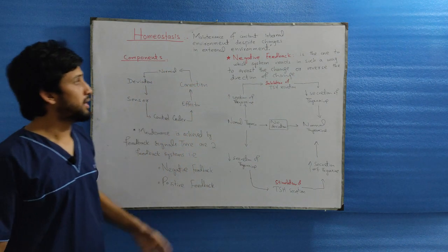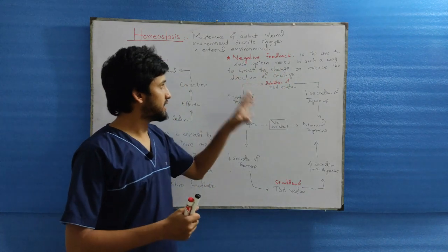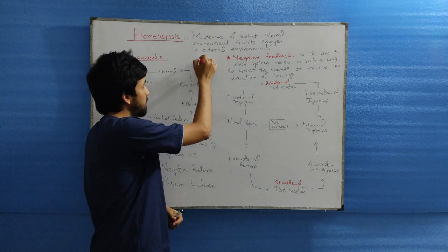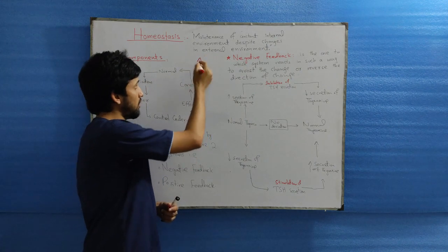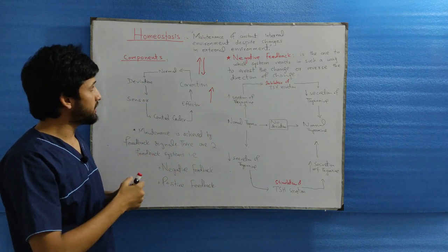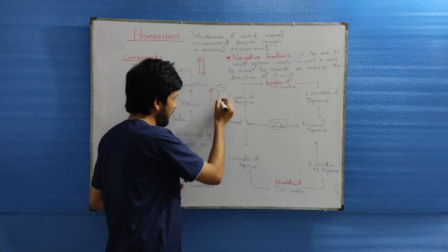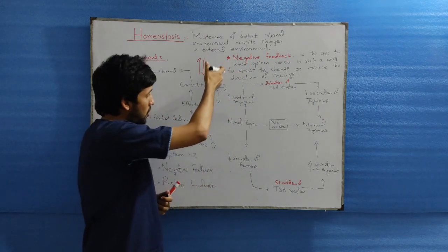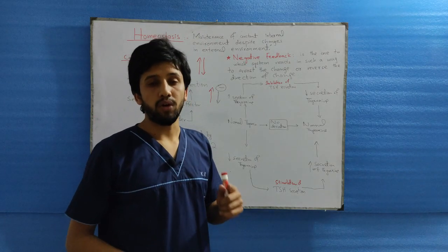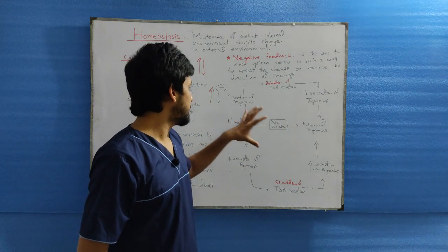The negative feedback mechanism is the point at which the system reacts in such a way to arrest or reverse the direction of a change. When there is a rise or alteration in any condition, the negative feedback will bring this back in the opposite direction. Here we are dealing with the example of TSH secretion.